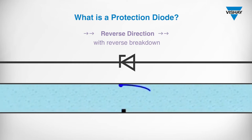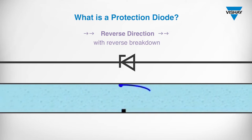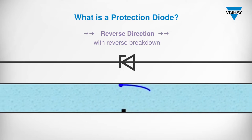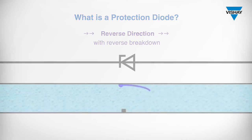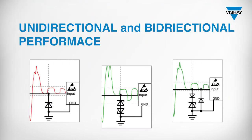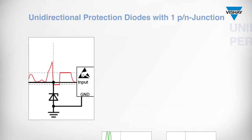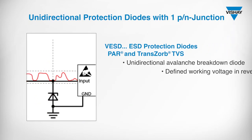In the case of bi-directional avalanche breakdown behavior, there is also a second diode in a row with reverse polarity. In the following, three basic circuits are described.